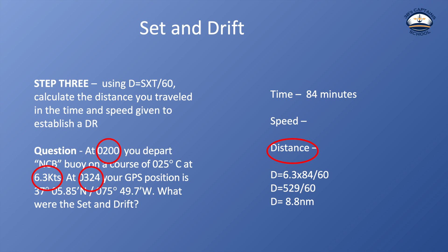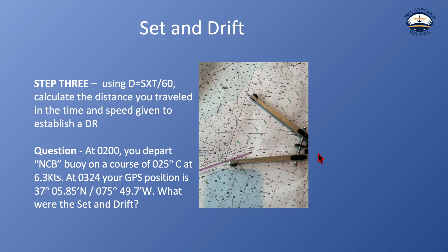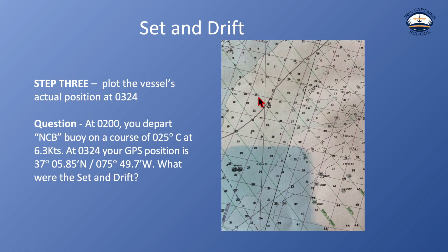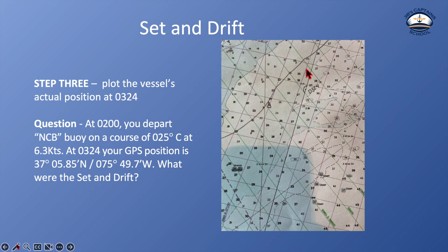Remember why distance is important — that's how far along that 015 line I should be. So I measure 8.8 nautical miles along the 015 line from the NCB buoy and make my mark. My mark ends up being right here, and this mark is known as a dead reckoning position. Dead reckoning advances my position based on course, speed, and time without consideration for set and drift. Without any current or wind, I should have been right here. The dead reckoning mark is a half circle with a dot.